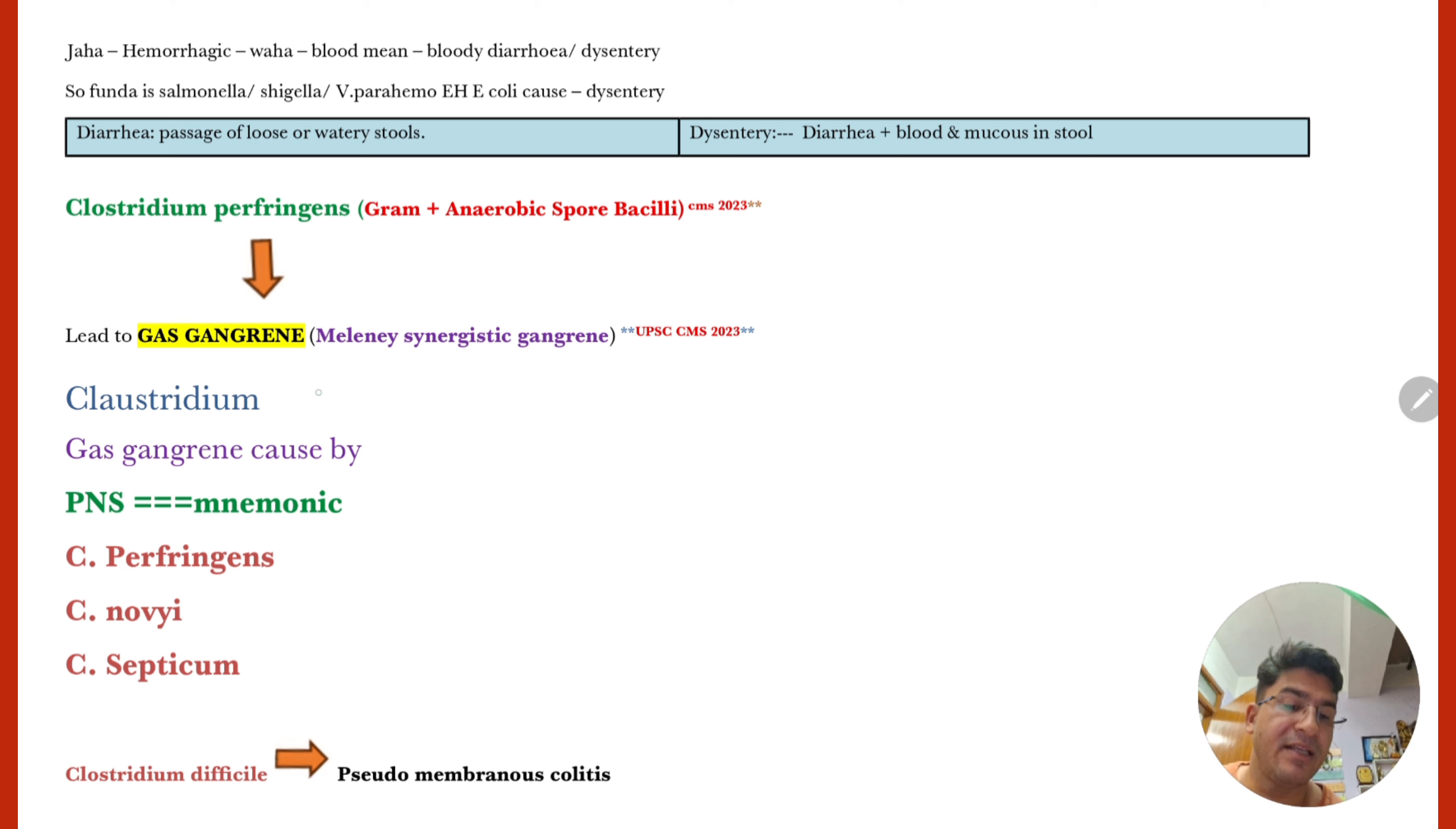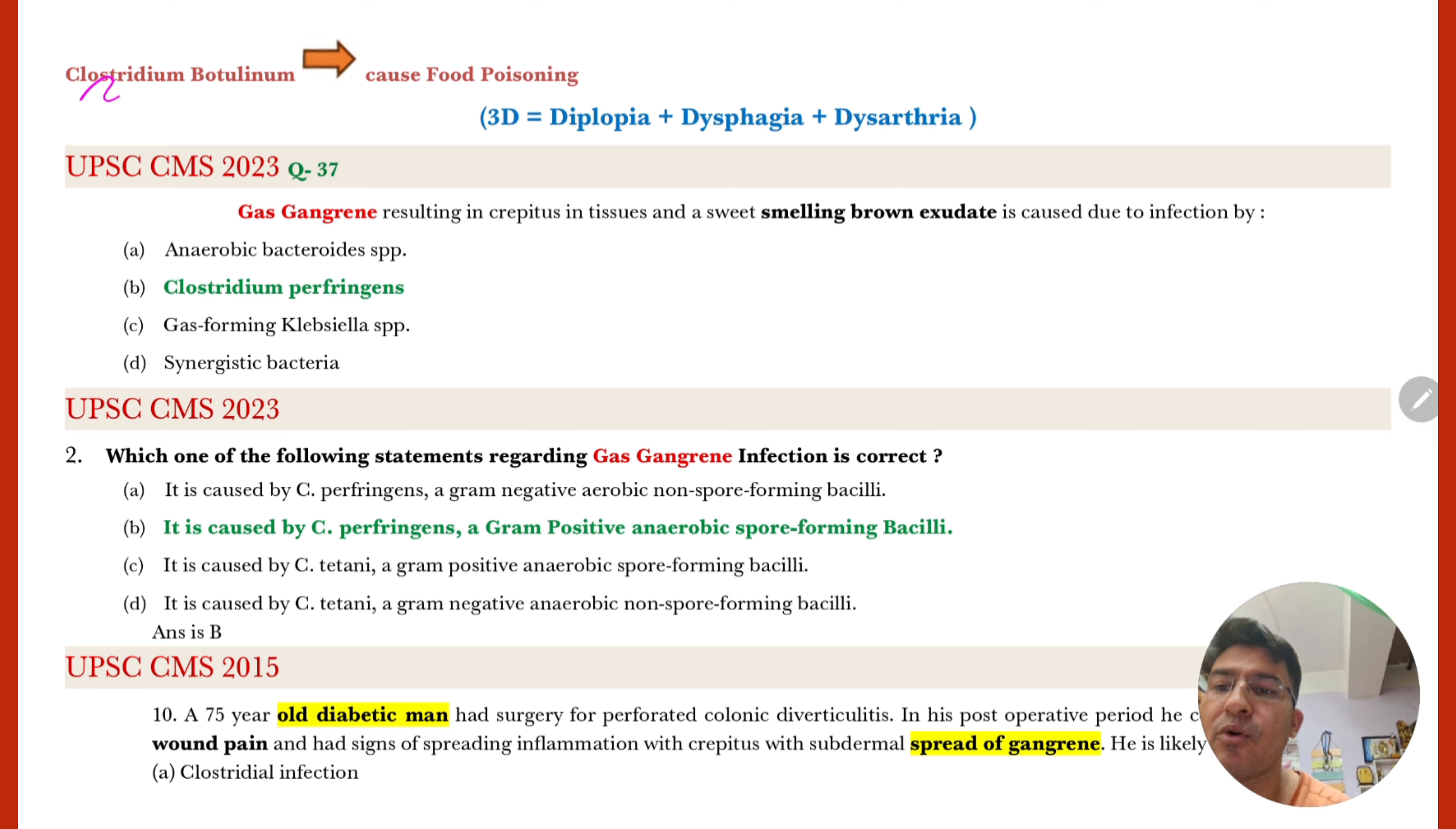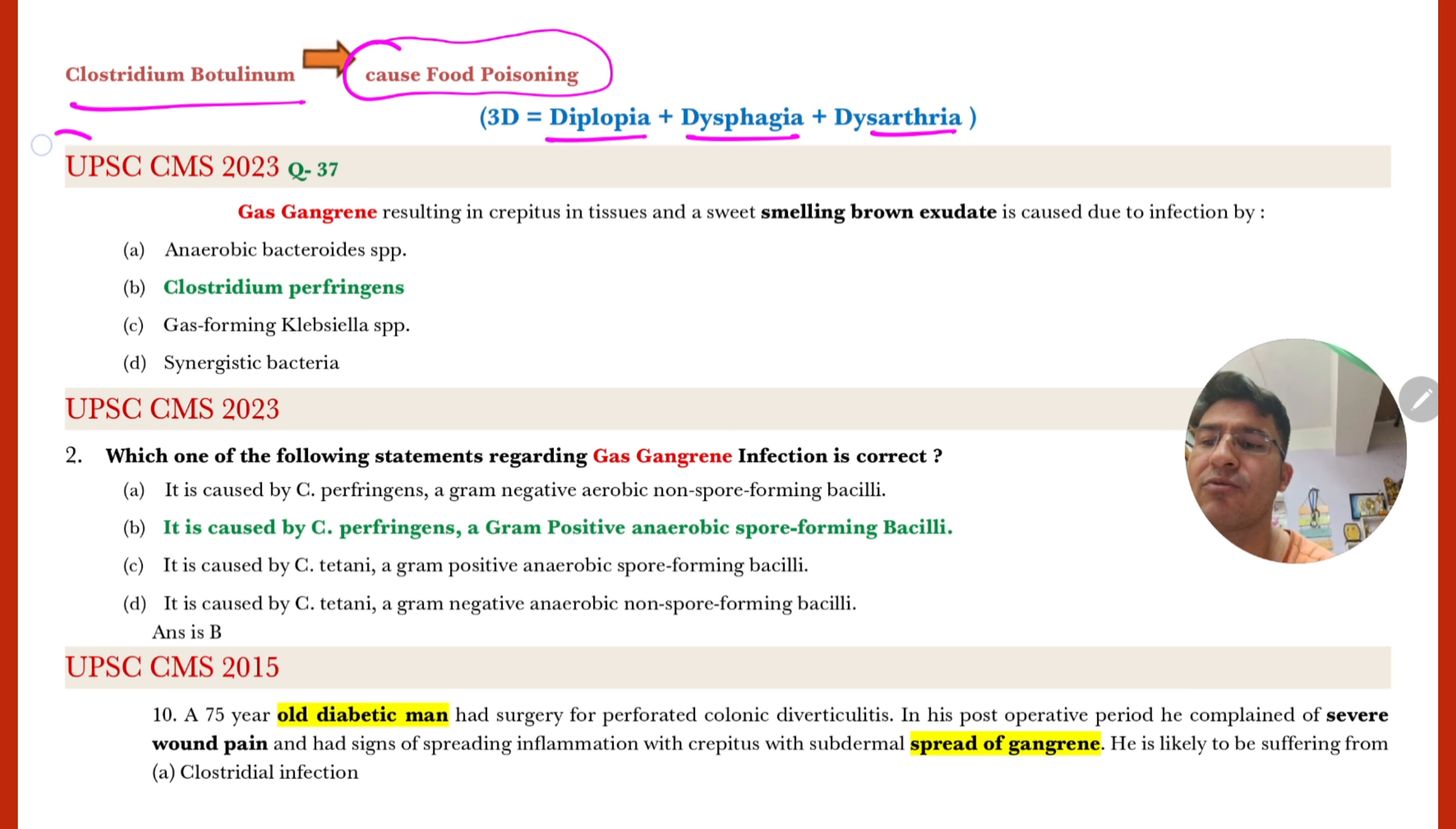Now come to very specific and very easy topic, means Clostridium. So Clostridium generally, gas gangrene ke liye jana jata hai. Right? So mnemonic is PNS. PNS lead to gas gangrene. Right? So Perfringens, Novi and Septicum, yeh teenon milke gas gangrene karte hai. Right? Aur gas gangrene ko hum Melanie synergistic gangrene bhi kehte hai. Question puchha gaya hai 23 mein. Right? So what is, agar hum Clostridium Perfringens ko aage bhi yaad karen, to it is gram positive, anaerobic spore bacilli. Right? So yeh specific point hai, easy point hai, aapko yaad hona zaroor hi hai. So Clostridium difficile kya karta hai? Pseudomembranous colitis karta hai, yeh bhi question puchha gaya hai. Right? And Clostridium Botulinum, yeh food poisoning karta hai. Food poisoning mein aapko diplopia, dysarthria, dysphagia bhi milta hai.